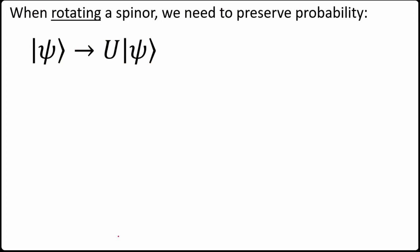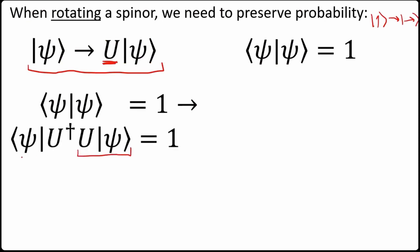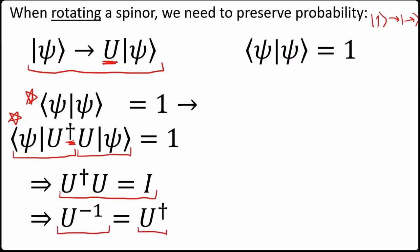Moving to rotating a spinor: if we rotate from the up state to the right state, we do it with some operation U (think of it as a matrix). We need to preserve probability, so if the ket transforms with U then the bra transforms with U†. Requiring the probability to be preserved implies U†U = I, meaning the inverse of U is its Hermitian adjoint — U is unitary.